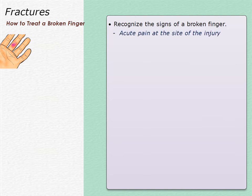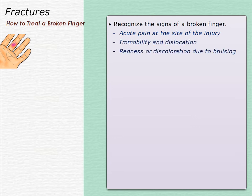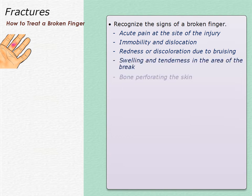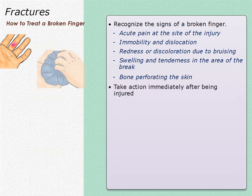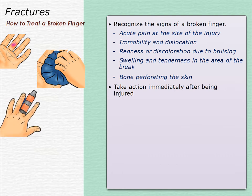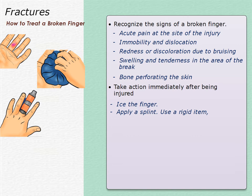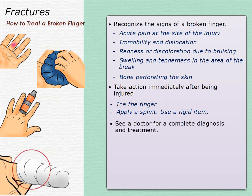Symptoms include acute pain at the site of injury, immobility and dislocation of the finger, redness or discoloration due to bruising, swelling and tenderness in the area of the break, and bone perforating the skin. Take action immediately after being injured — you can take simple steps to reduce pain and swelling. Ice the finger. Apply a splint or use a rigid item like a pen to make a temporary splint. Place the item along your finger and wrap your finger and the item together with tape.